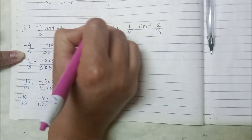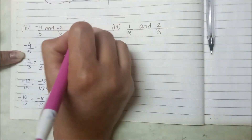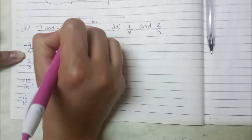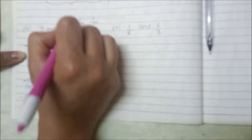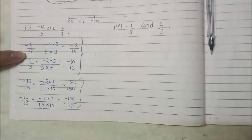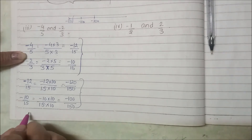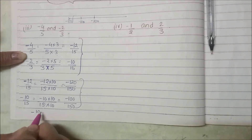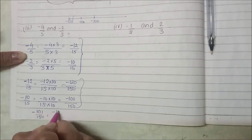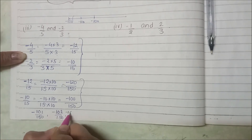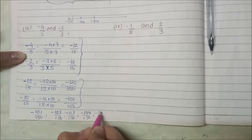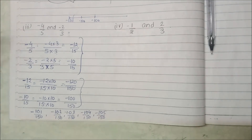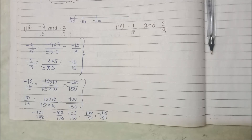If we make the number line by multiplying by 10, we can write minus 100 here and minus 120 here. Between these numbers we will get many numbers. So we have to write 5 numbers from these. We can take any 5 numbers upon 150, such as minus 101 upon 150, minus 105 upon 150. You can also pick any numbers between minus 100 and minus 120.